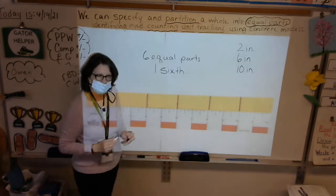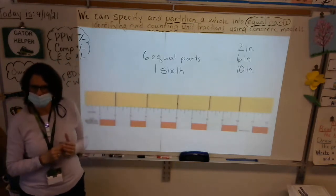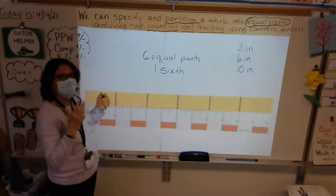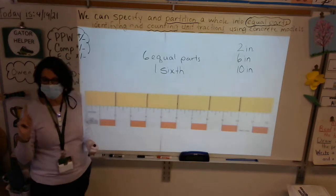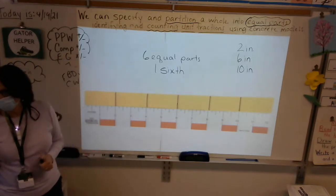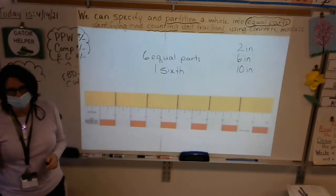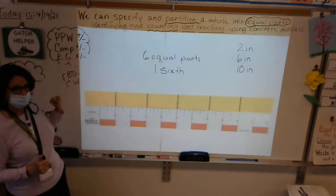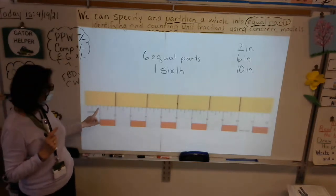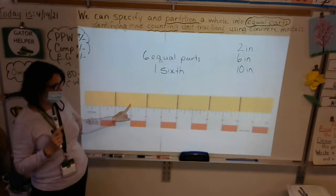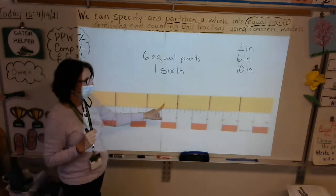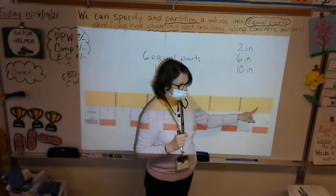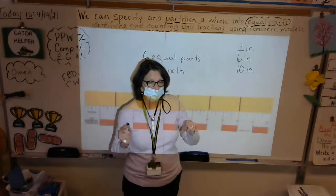Does that make sense? Raise your hand if this sounds slightly familiar from last year. Now let's count, boys and girls — I want to see everybody pointing with one-on-one correspondence. Get your finger or pencil ready: one sixth, two sixth, three sixth, four sixth, five sixth, six sixth. Let's do it again on your own strip: one sixth, two sixth, three sixth, four sixth, five sixth, six sixth. When we have six equal parts, each one is called one sixth.